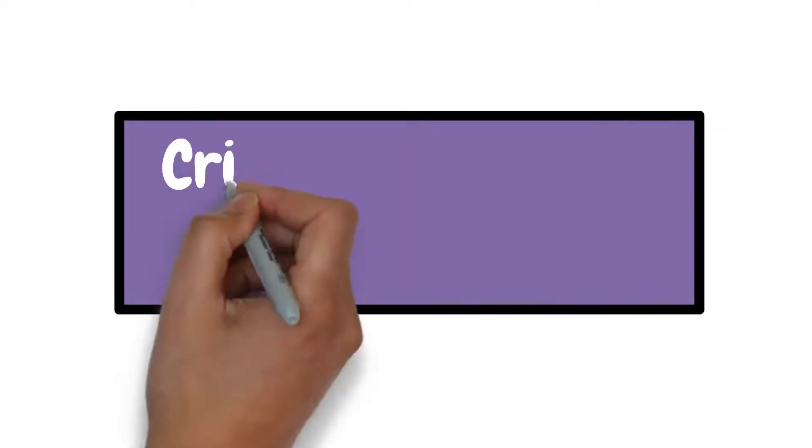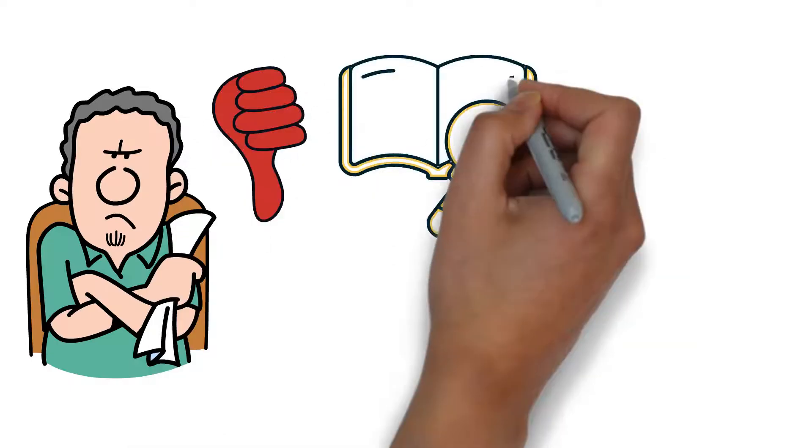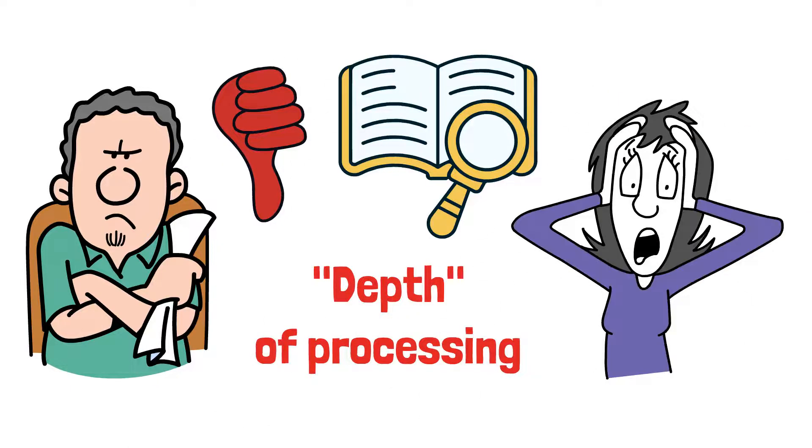However, the theory also faces criticisms. One criticism is that it lacks a clear operational definition of what constitutes depth of processing, making it difficult to measure and apply consistently across different contexts.